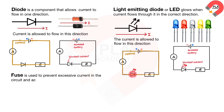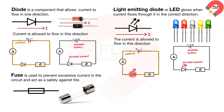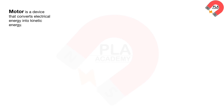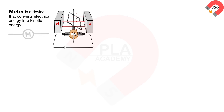A fuse is used to prevent excessive current in the circuit and acts as a safety measure against fire. This is the symbol of a fuse. More detail on the fuse will be covered in section 4.4 electrical safety. A heater is a device that converts electrical energy into heat energy. This is the symbol of a heater. A motor is a device that converts electrical energy into kinetic energy. This is the symbol of a motor, with more detail covered in section 4.5.5 DC motor.